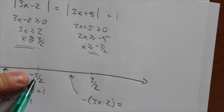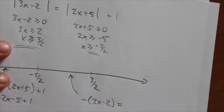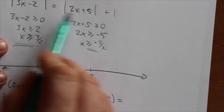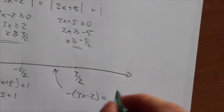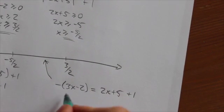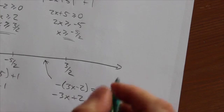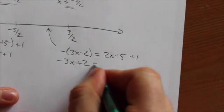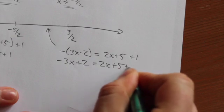But in this section right here, I am still to the right of negative 5 over 2. So this section right here, this piece will be positive, so the absolute value will just leave it alone. And so now I put the negative 3, I get negative 3x plus 2, sorry I'll move that up for you, is equal to 2x plus 5 plus 1.